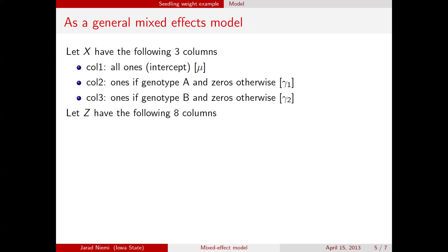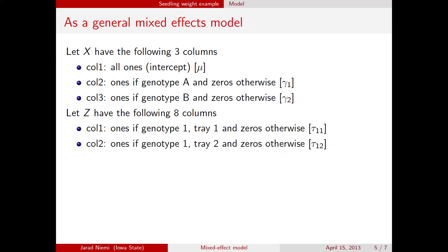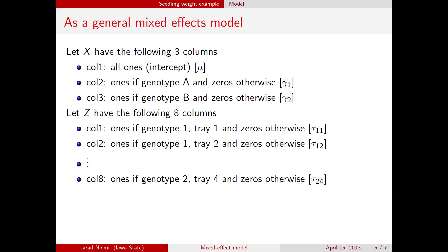Z then has eight columns — one for each tray. The first column has ones if it's genotype 1, tray 1, and zeros otherwise, corresponding to τ_{1,1}. The second column corresponds to τ_{1,2}, and so on, until the last column which has ones for genotype 2, tray 4. Both design matrices are binary, indicating in X which genotype and in Z which tray each observation comes from.